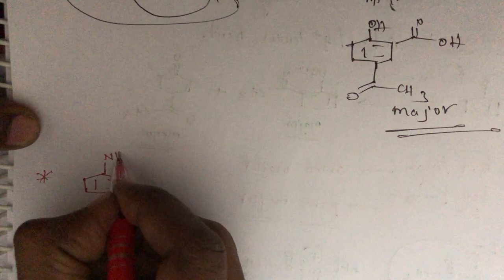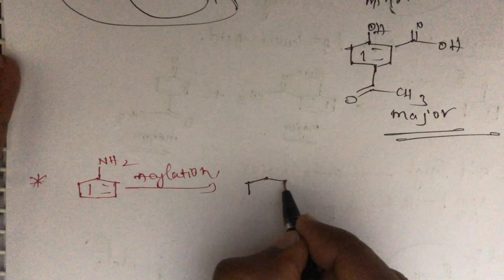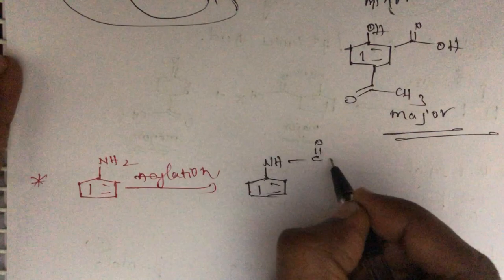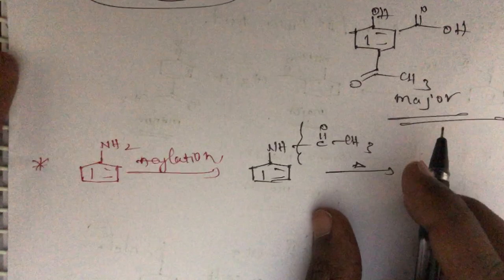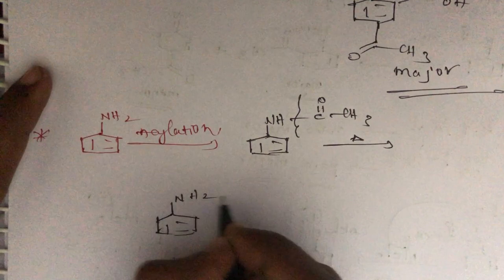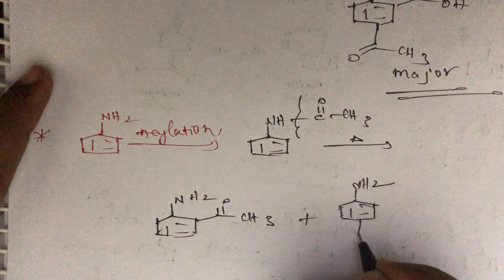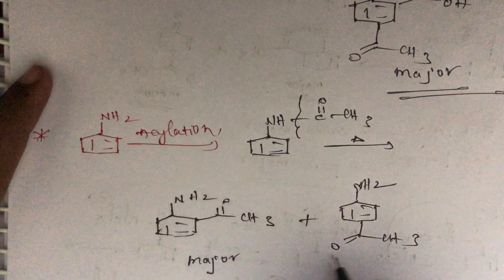Taking a compound with an NH2 group, we do the acylation. After acylation, the product is NH2 with C double bond O-CH3. Again, treated with heating conditions, we get two products: the ortho product NH2-C double bond O-CH3 and the para product NH2-C double bond O-CH3. The ortho product is major due to hydrogen bonding, and the para product is the minor product.